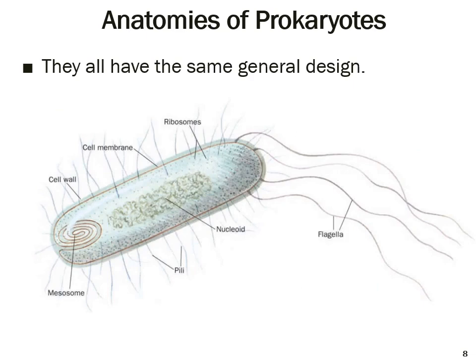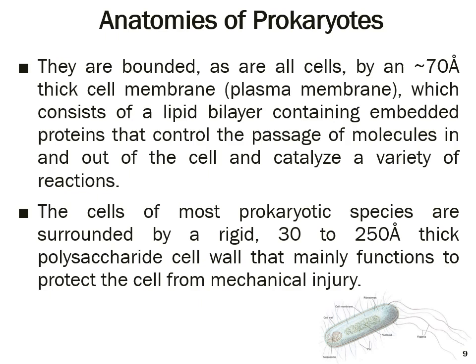Prokaryotes have the same general design. Their internal organization is more or less similar, though shapes may be rod-like, round, or different, but the basic assembly is the same. They have protrusions like flagella — hair-like structures that help in movement. Inside, there is a nucleoid — the nucleus is not defined with a membrane. They also have pili, mesosome, cell wall, cell membrane, and ribosomes. We will look at the details of these in the next slides.